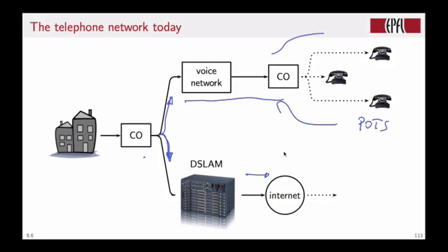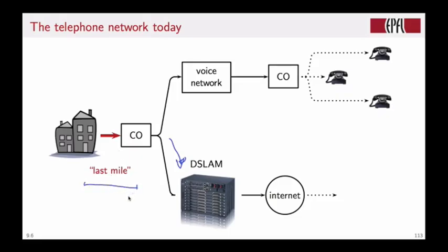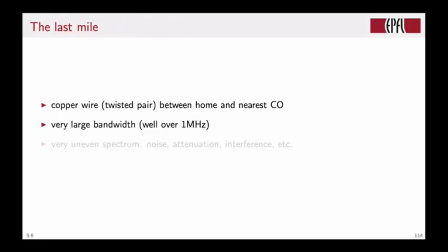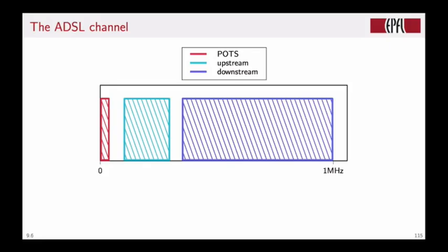What we're really interested in is how to send the data from your home to the central office, because what happens afterwards is already entirely in the digital domain. But here we have what is called the last mile, a piece of copper wire, namely an analog channel that connects your home to the central office. Now a copper wire has naturally a very large bandwidth in excess of 1 MHz, but because of the width of the bandwidth and because the wire is not shielded, it is actually likely to pick up a lot of interference and noise. If we look at how the ADSL channel is organized, and we're showing here just the positive frequencies, we can see three distinct regions.